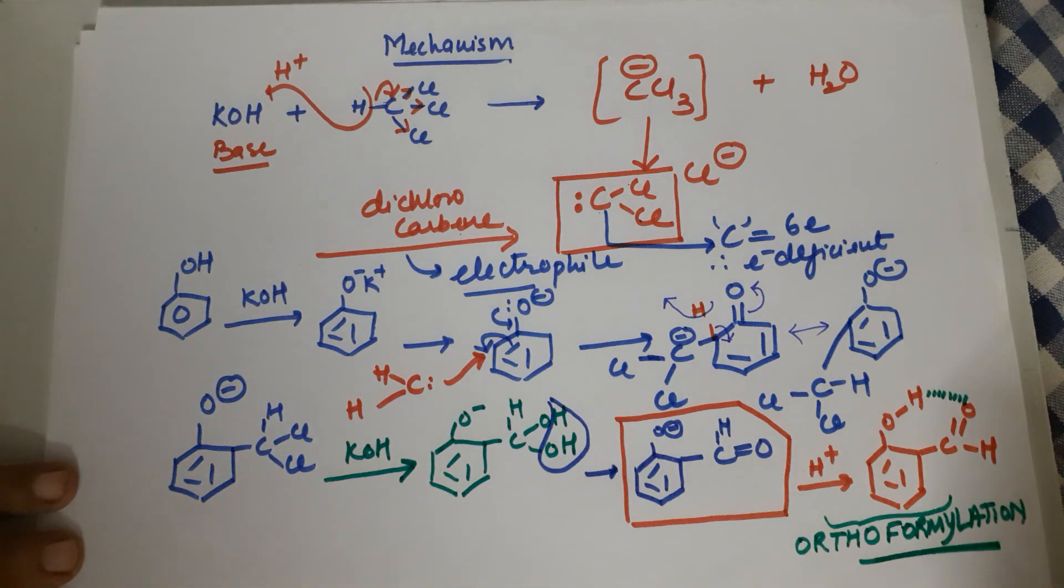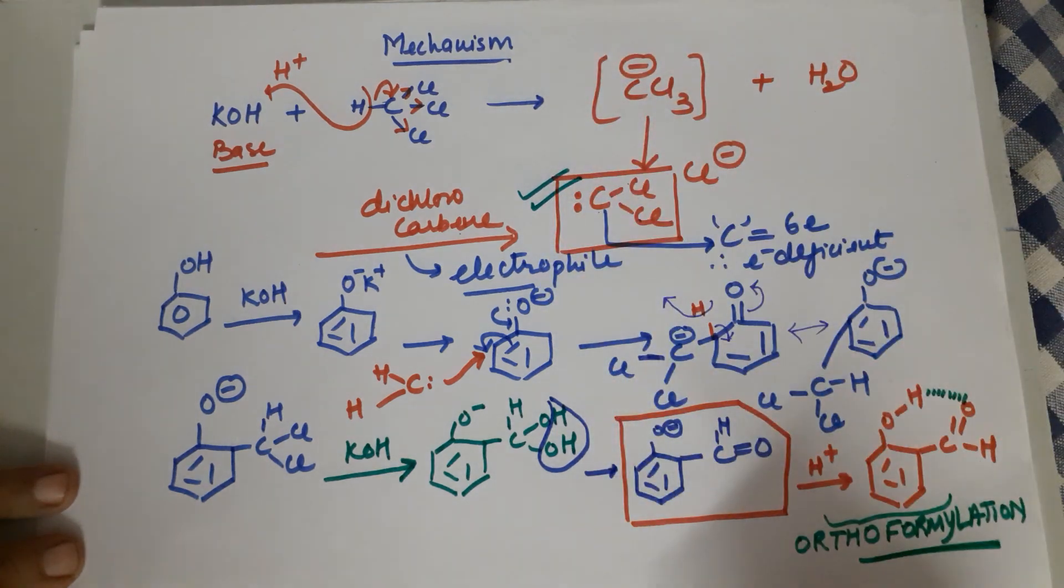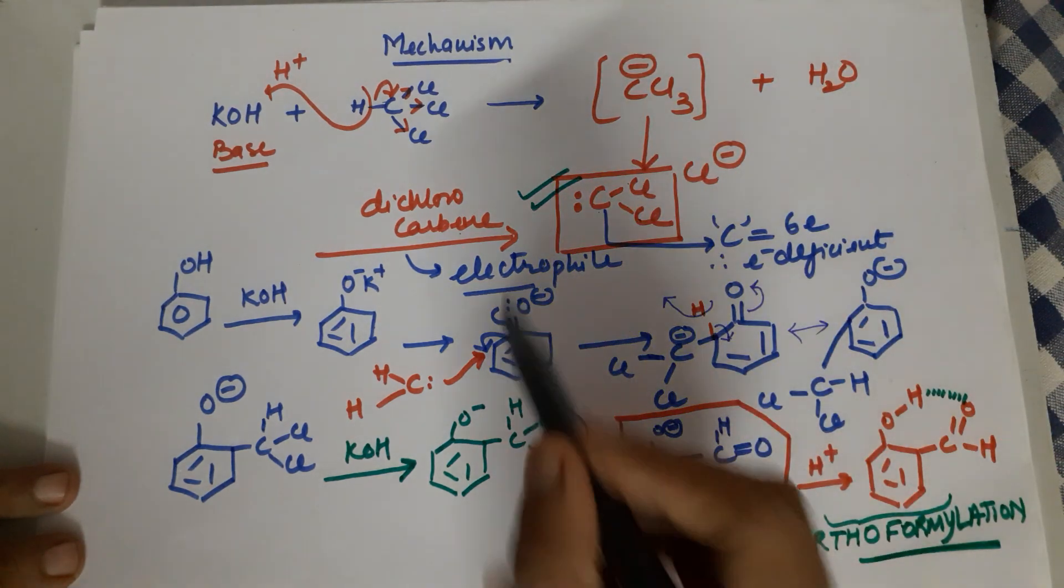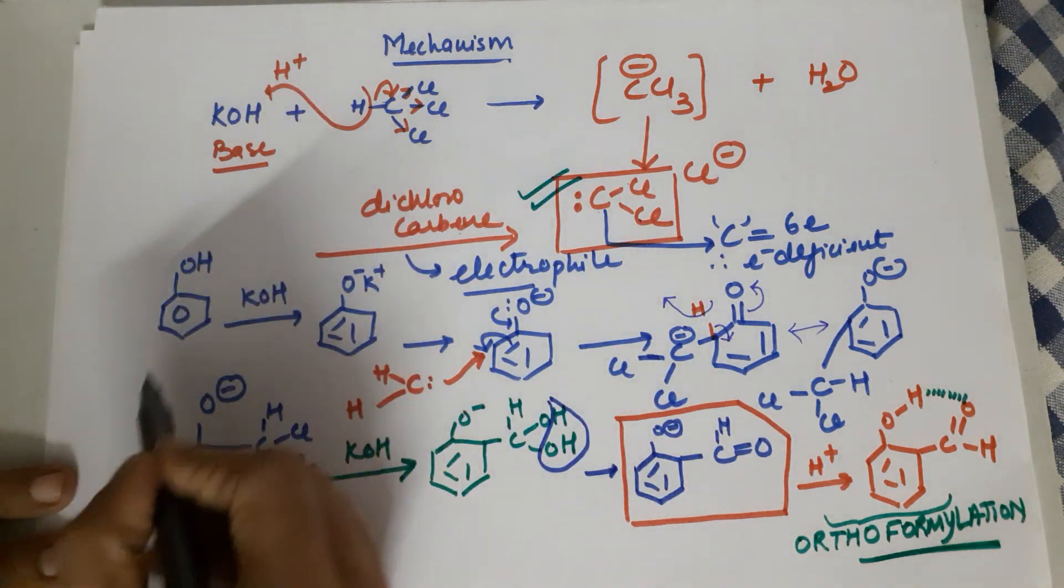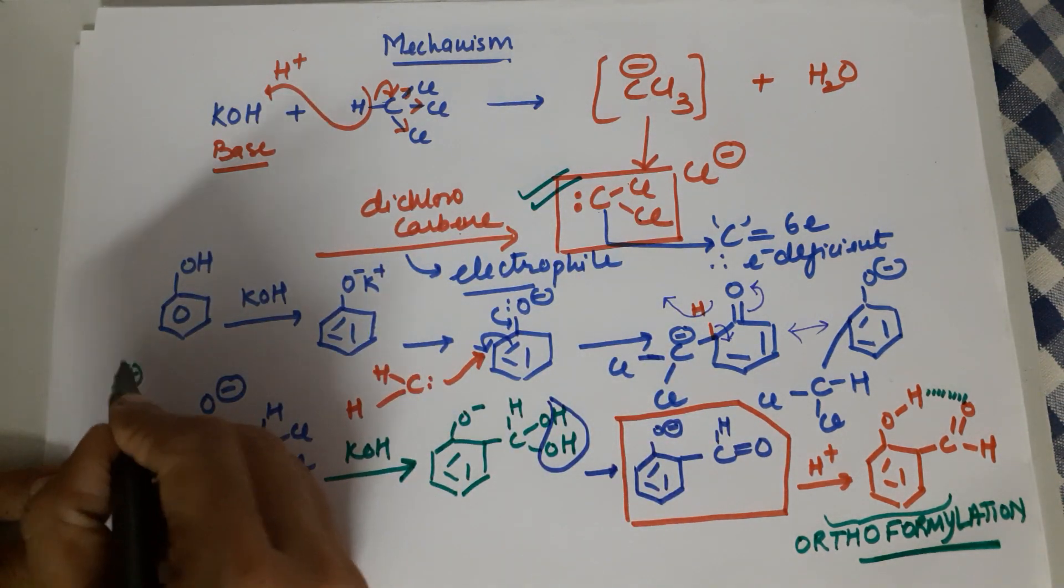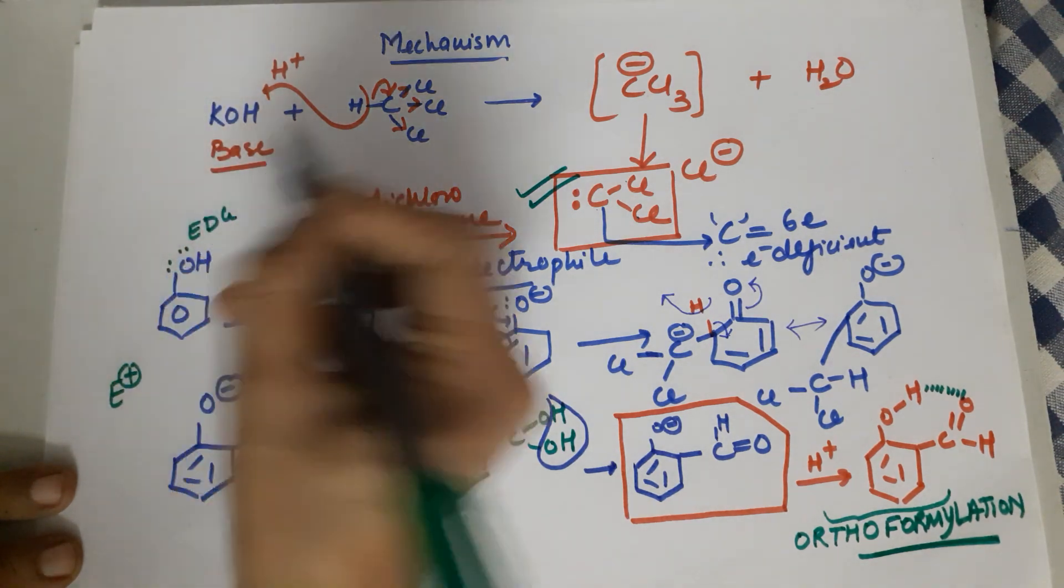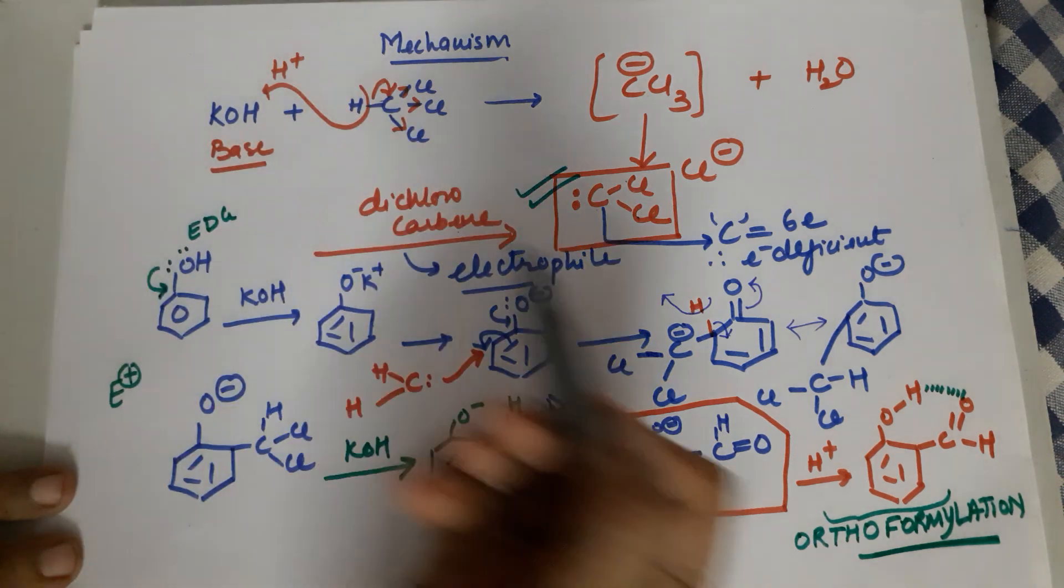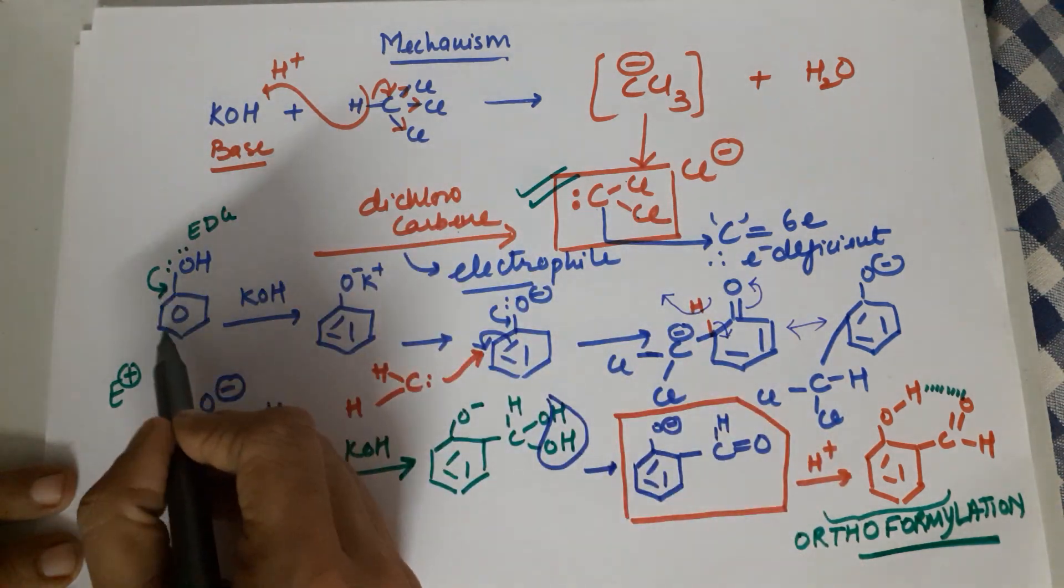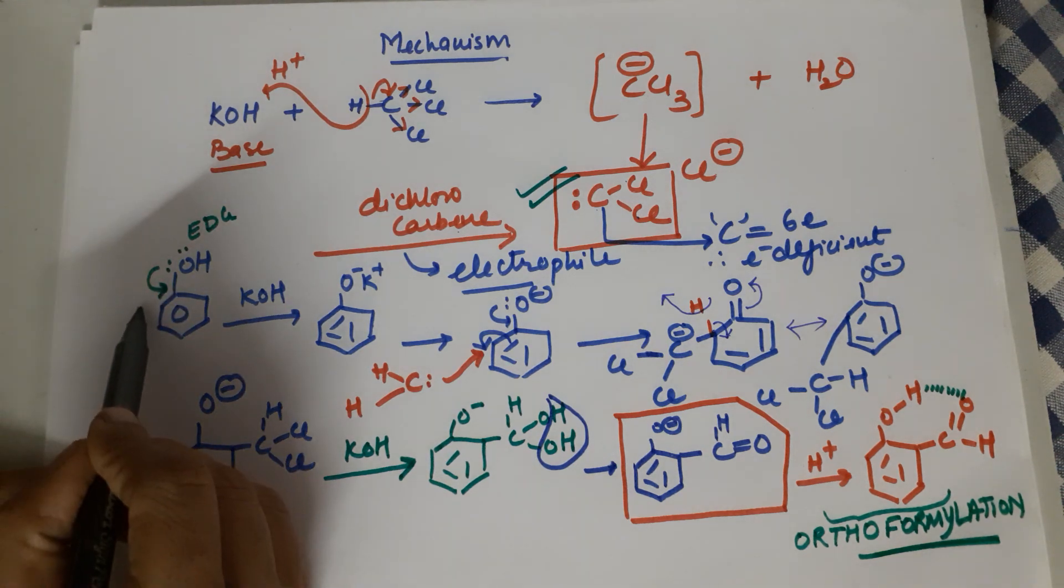That is all for the mechanism. Of course this mechanism is not asked in CBSE but this part of the mechanism should be known to you, that this is the electrophile and it is the electrophilic attack onto phenol. As you very well know, phenol, the OH group has lone pairs. So it is an electron donating group. Since it is electron donating group, you know the resonating structures. So when the electron density goes to the benzene ring, the benzene ring becomes electron rich at ortho and para.